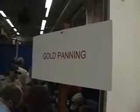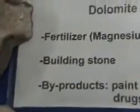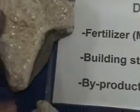There's gold panning. These are a lot of the boy scouts and group members panning for gold. Granite, limestone, sandstone, and marble. Here's some marble — here it is polished, here it is raw. They polished the other side. Here's granite. Dolomite — fertilizer for magnesium, building stone, and byproduct used for paint and drugs.